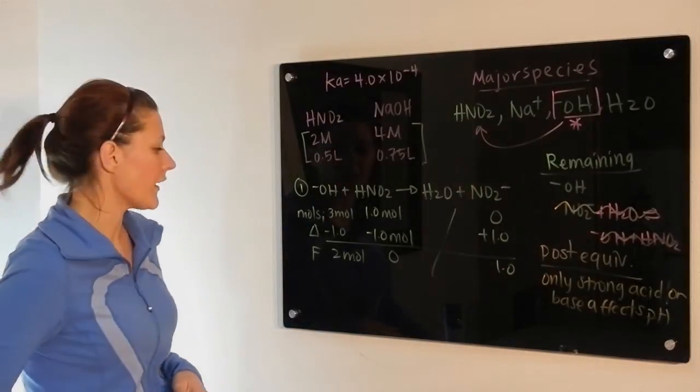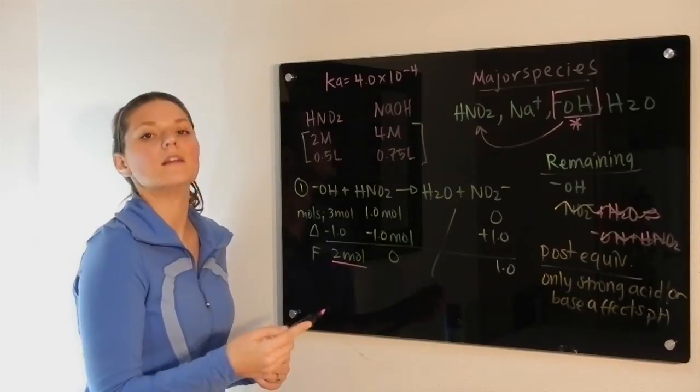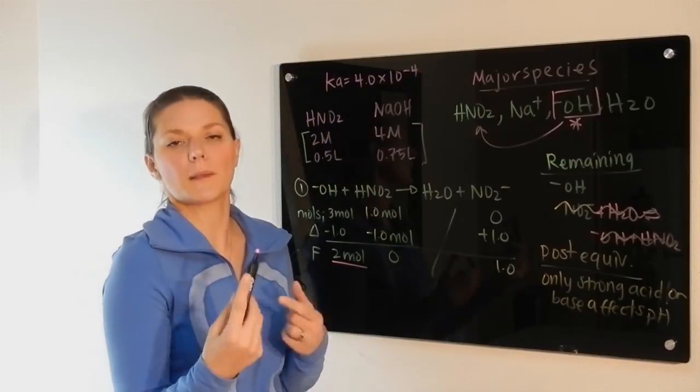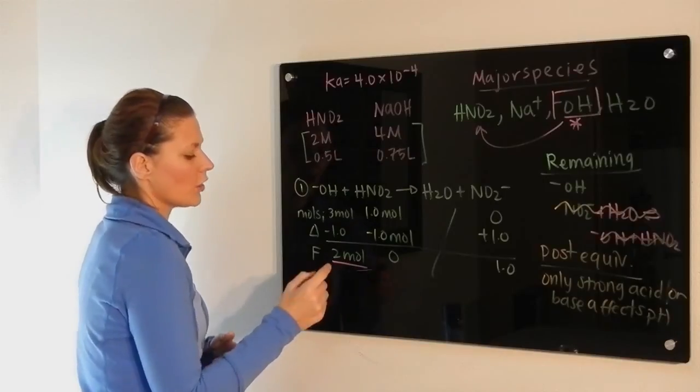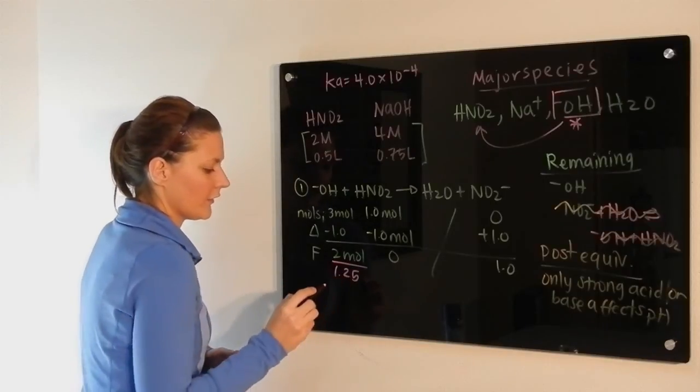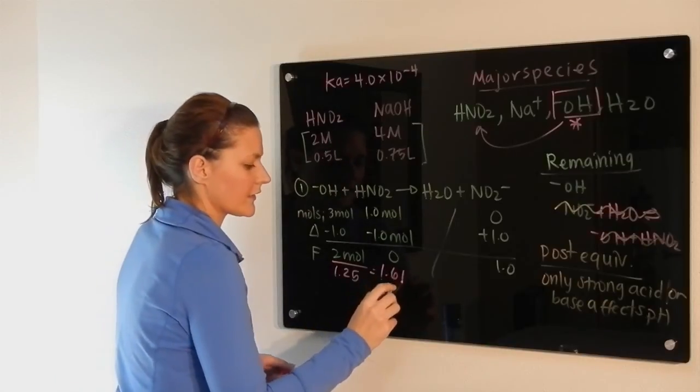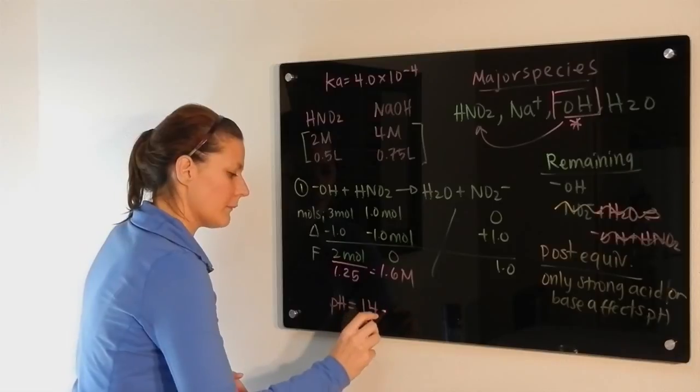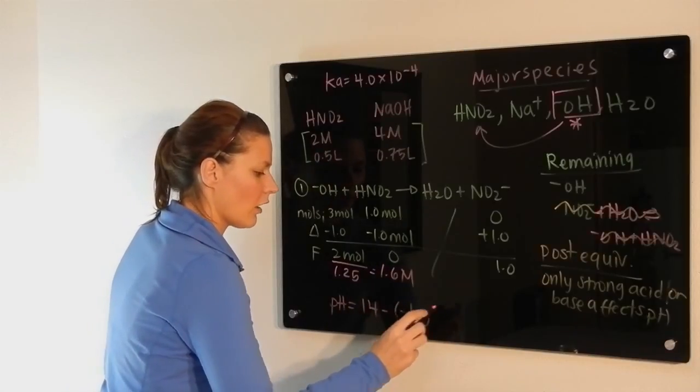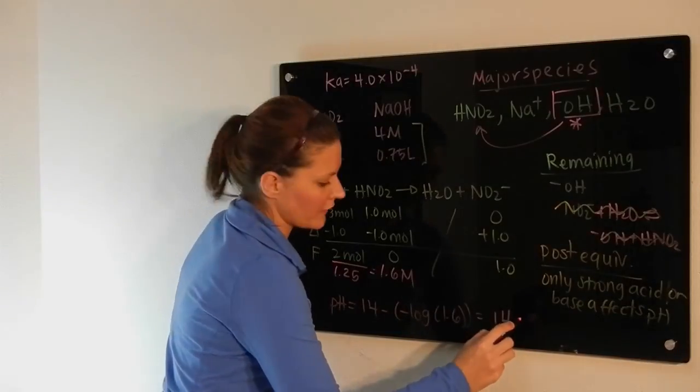So that means what I need to do then is take this value here, convert it to molarity, get my pOH, and from my pOH, get my pH. So I'm going to divide that by the total volume, which is 1.25. And that is a concentration of 1.6 molar. So my pH is equal to 14 minus the negative log of 1.6, which gives me a value of 14.20.